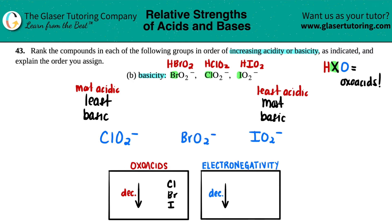Now we just have to put our arrows. Since it's going from least to most, you put less than signs: ClO2 minus is a less base than BrO2 minus, which is a less base than IO2 minus. We figured out the trend.